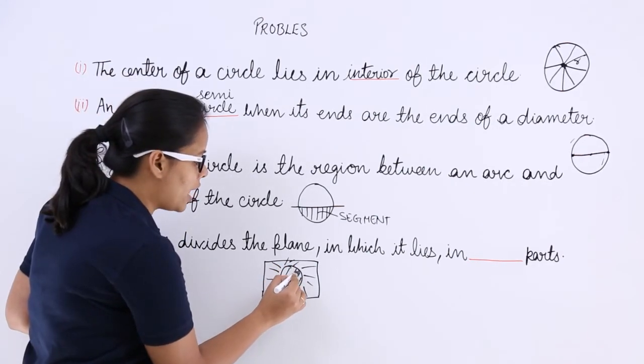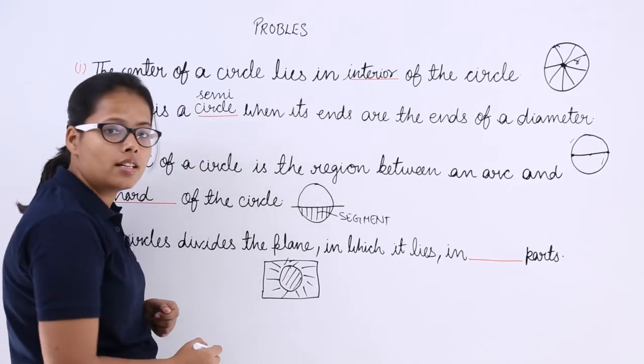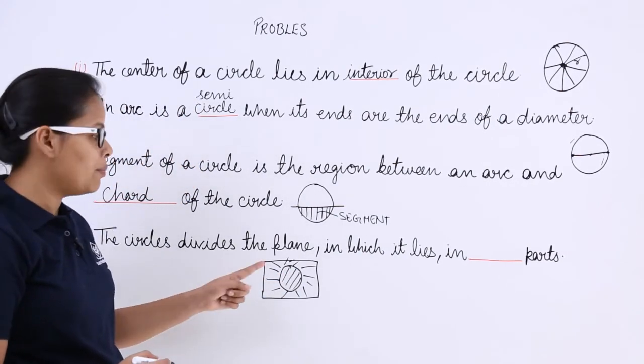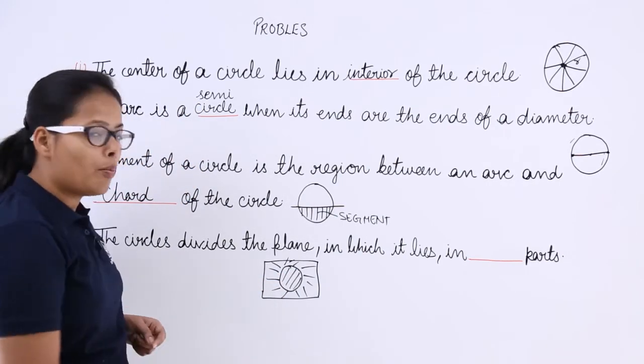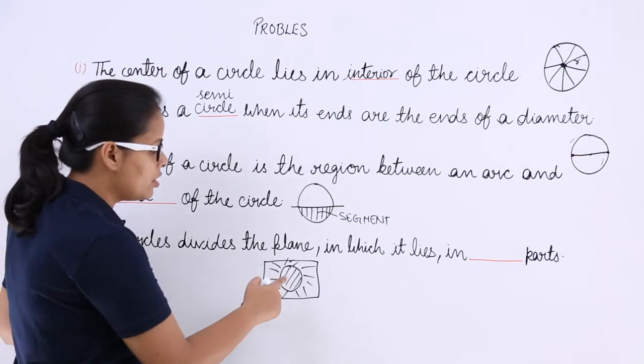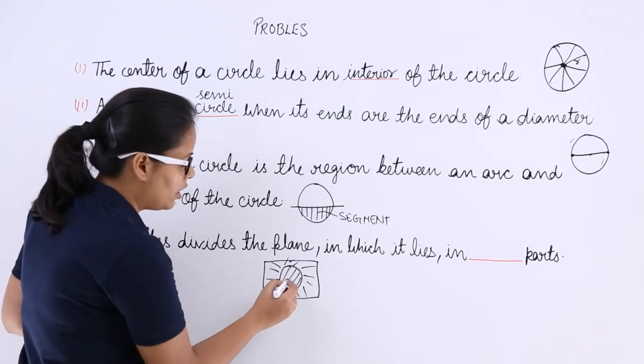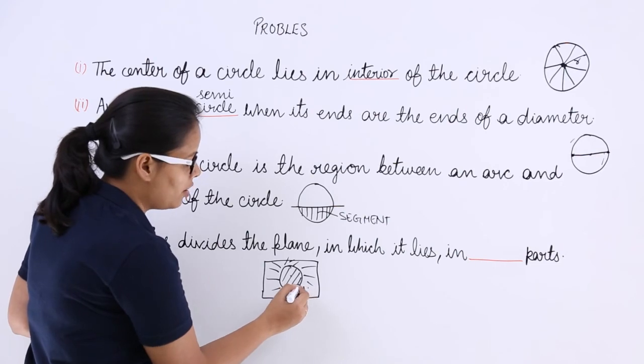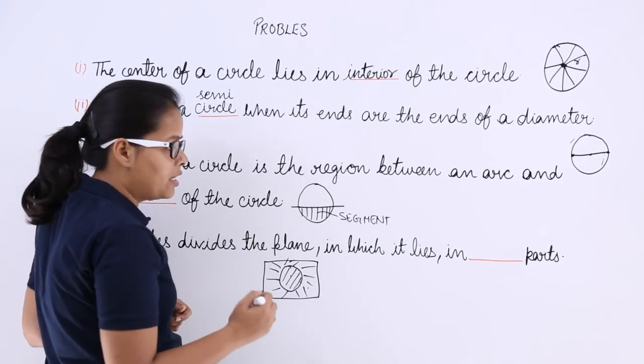And this part is, this line, this circular line is the line of the circle or the perimeter of this circle. So in how many parts is this dividing the plane? Interior, exterior, plus this line. So how many parts? Three parts.